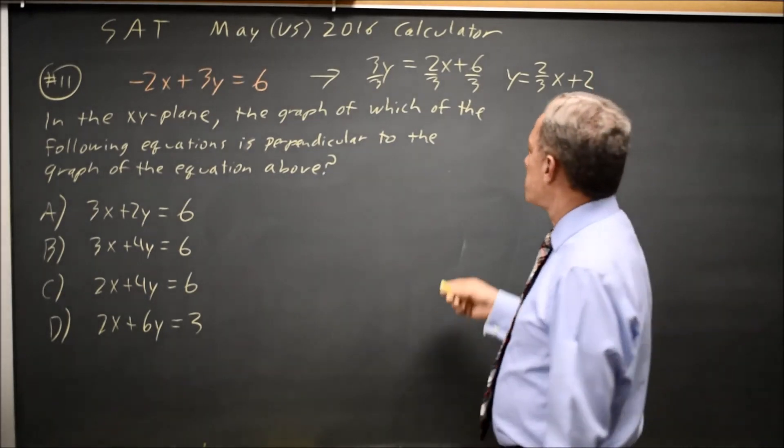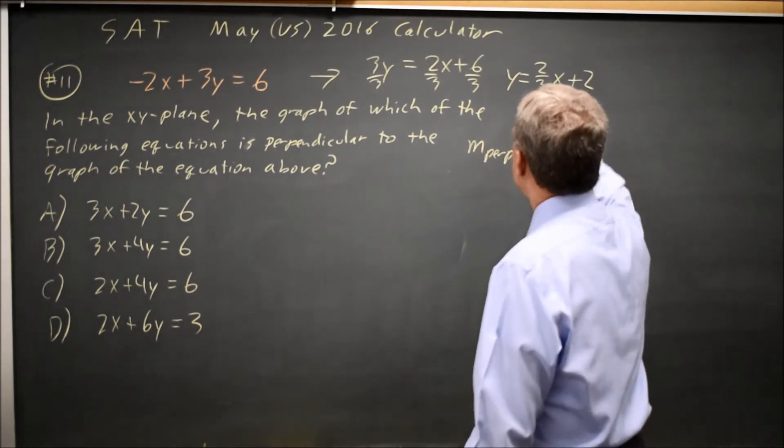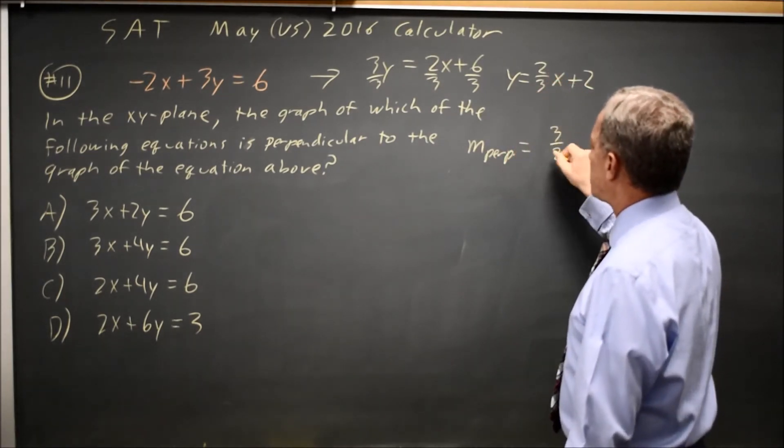Y equals 2/3 X plus 2. To find the perpendicular slope, you flip this, 3 halves, and then take the negative.